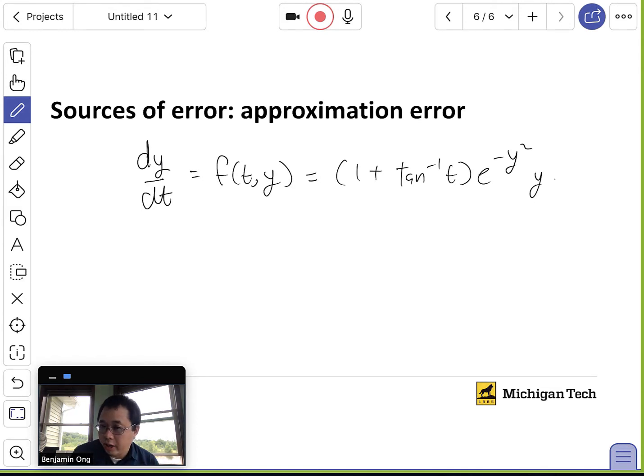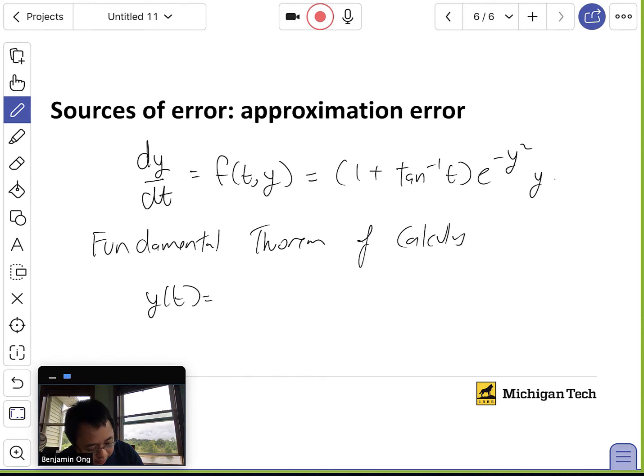Now, of course, we could try and find an exact solution, say, plugging this differential equation into a symbolic software package like Mathematica or Maple. But here in this course, what we care about is approximating solutions. So the fundamental theorem of calculus, if you remember it, says that we can write our solution to this differential equation in the form of an integral. So y of t is the integral from 0 to t of f of tau, y of tau, d tau.